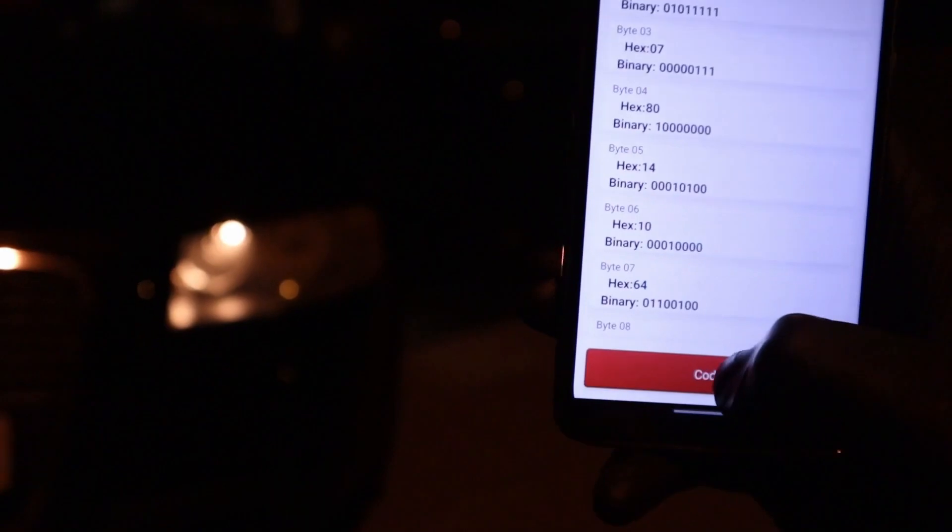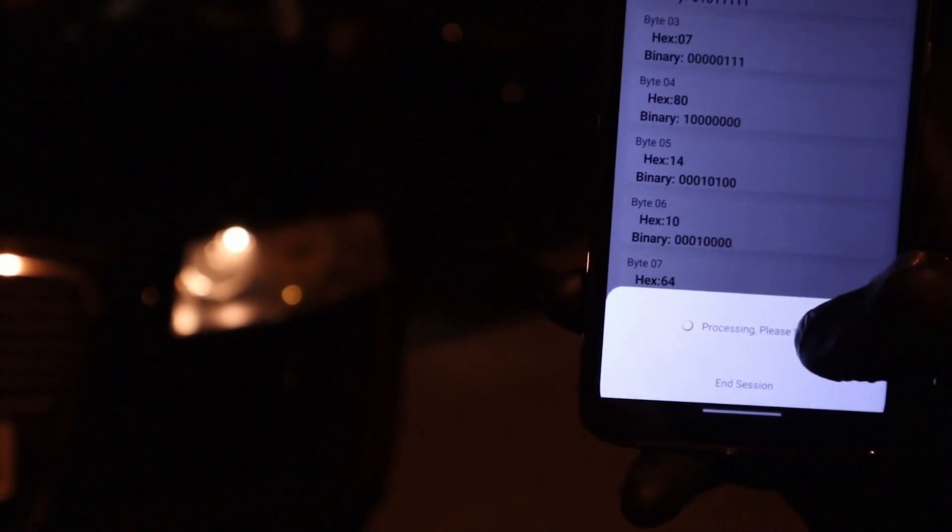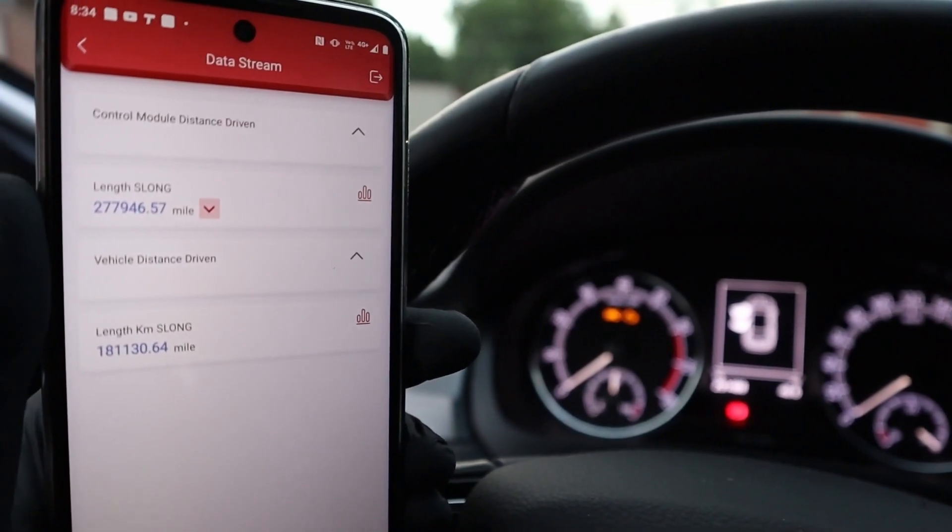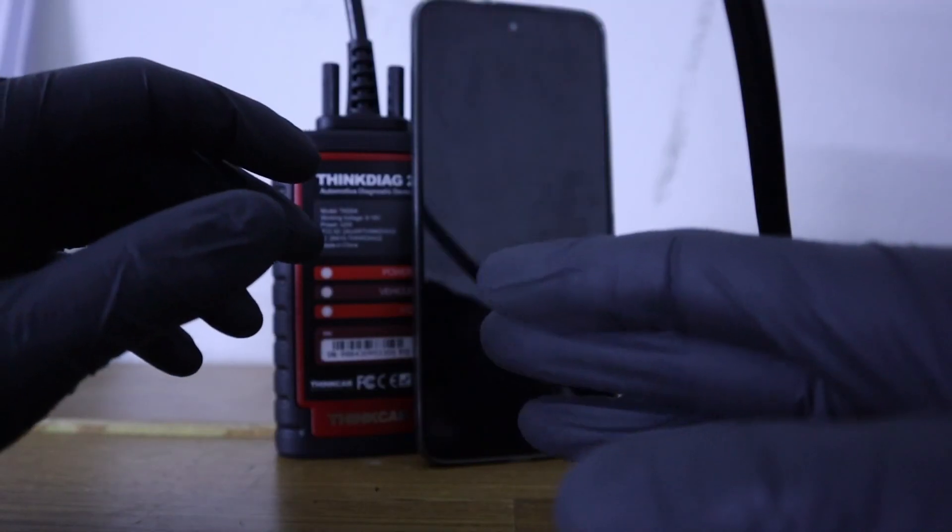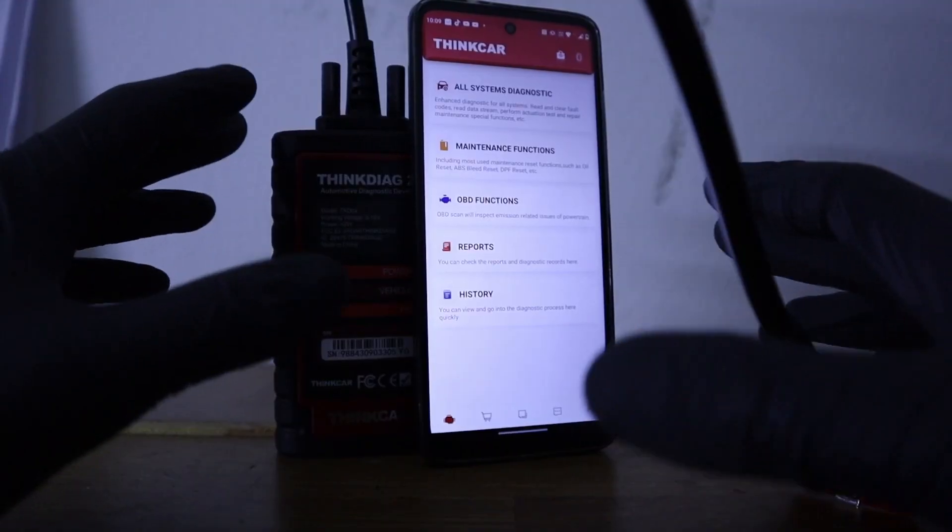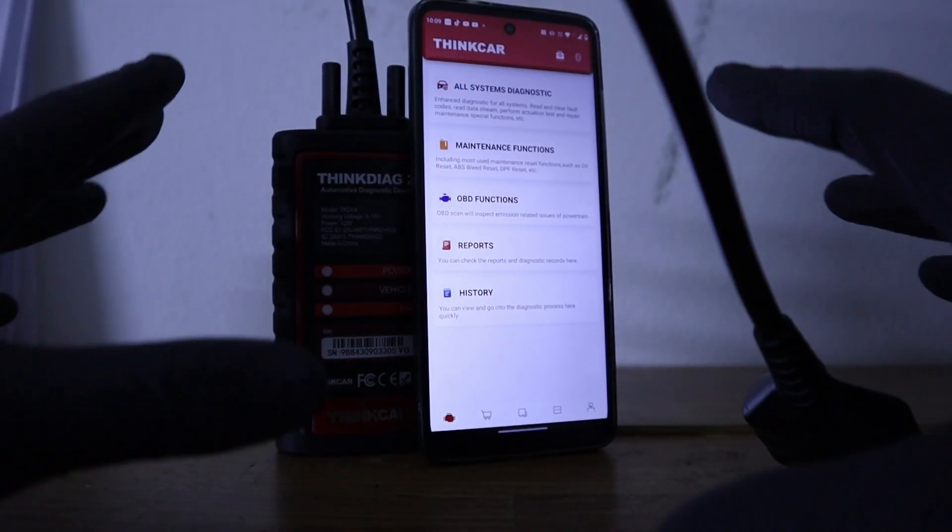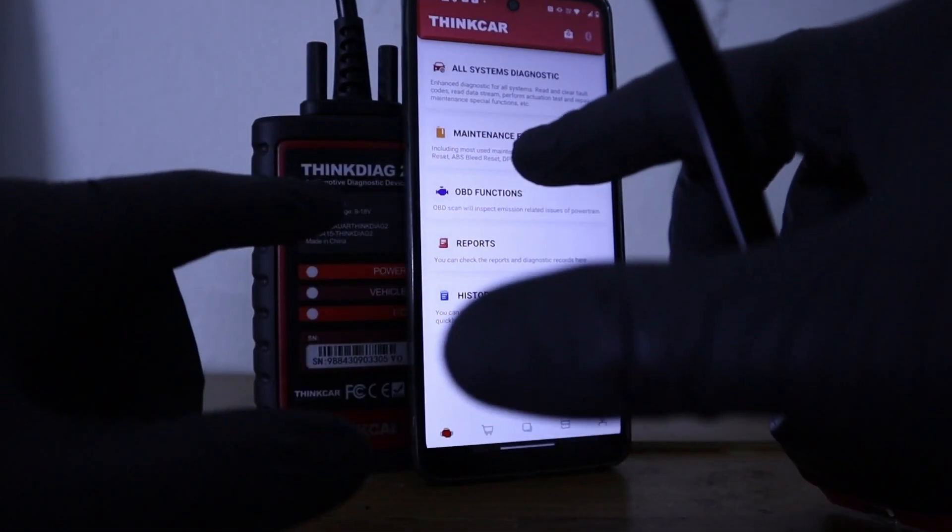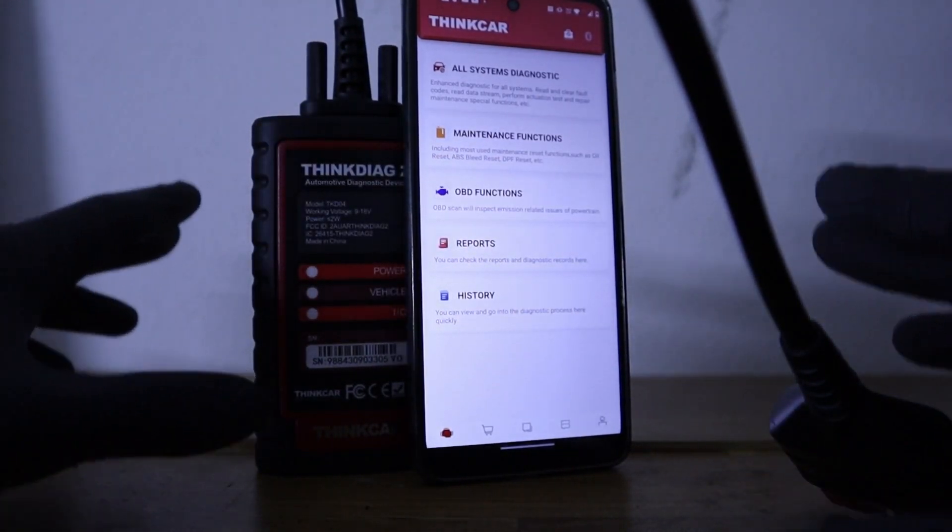It can fastly scan all modules. It can do ECU coding. You can read bunch of data, for example, verify real mileage of vehicle. Use service procedures like injector coding, unlocking electronic brake calipers. You are basically getting this professional handheld scanner features in this Bluetooth package. It is really good.